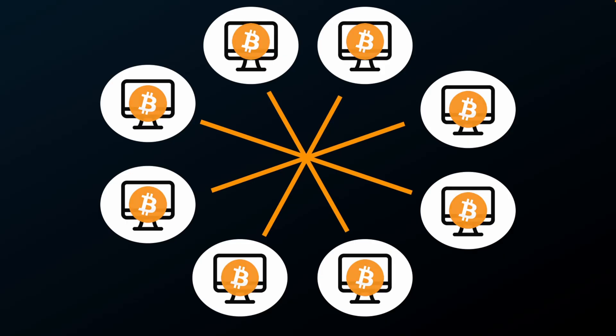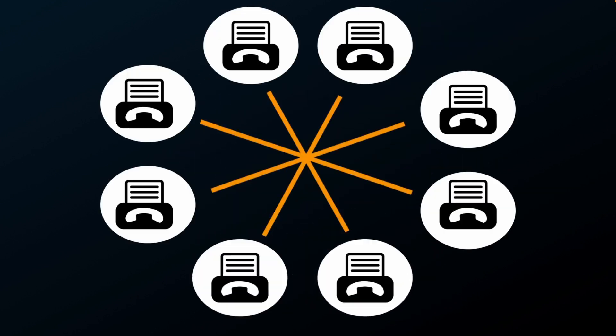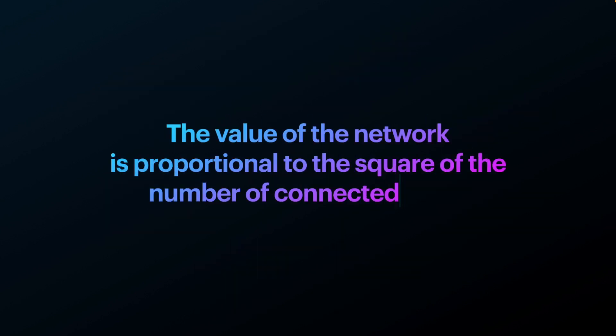This looks very similar to the model of the fax machine. A fax machine allows someone to send or receive messages as long as they have the fax number — think of it as the telephone number for another fax machine. Fax machines are not very useful on their own; a fax machine needs to be connected to a network to become useful. This means the value of the network is proportional to the square of the number of connected users — and this is a quote from Metcalfe.